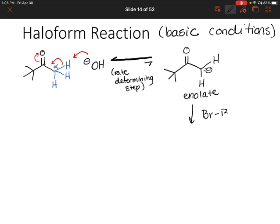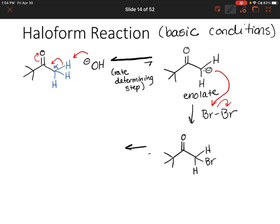Next we're going to add bromine. That negative carbon is going to attack one of the bromines, and we end up adding bromine to our alpha position. However, once we've added one bromine, that makes the other alpha protons more acidic. So we can actually over-halogenate again — this gives us three bromines, and our alpha carbon now has three bromines attached.